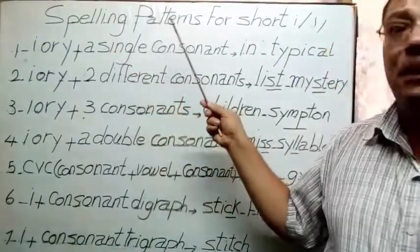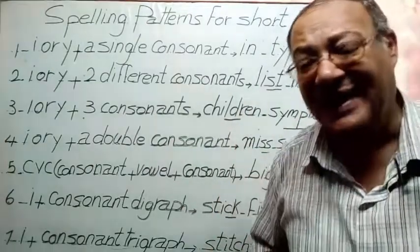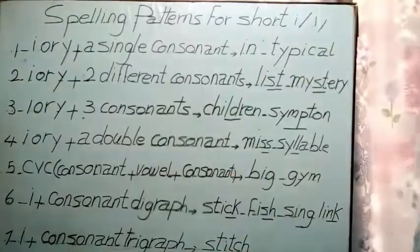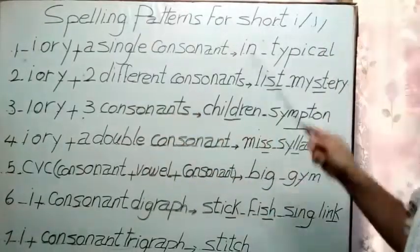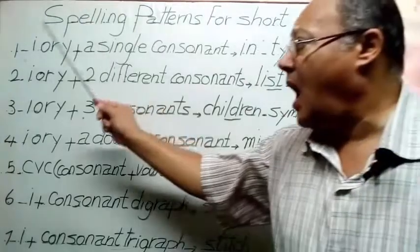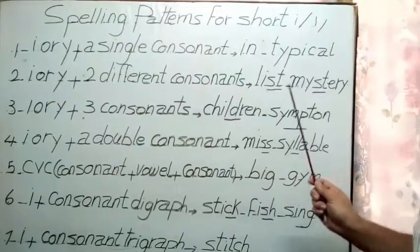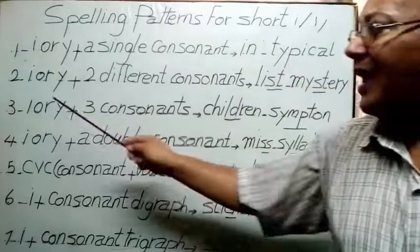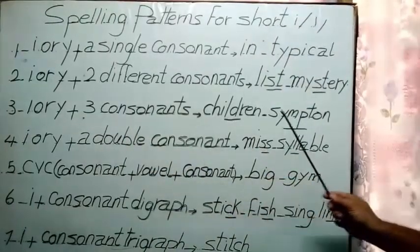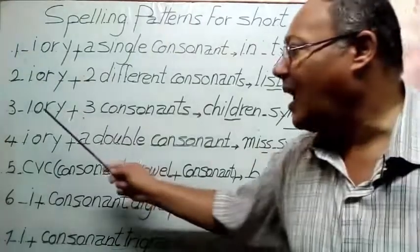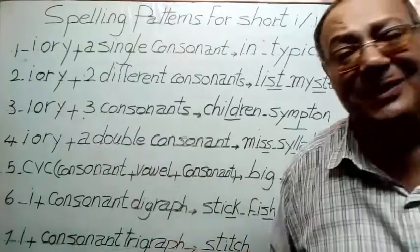Spelling patterns for short I. Short I is also called unstressed I. I or Y plus a single consonant in typical. I or Y plus two different consonants: list, mystery. I or Y plus three consonants: children, symptom. I or Y plus a double consonant. What is meant by a double consonant?